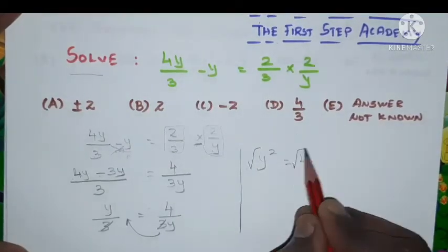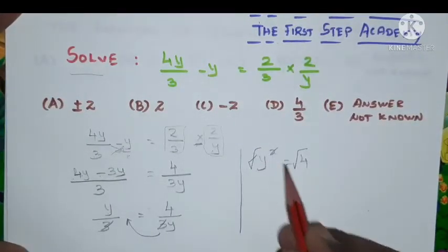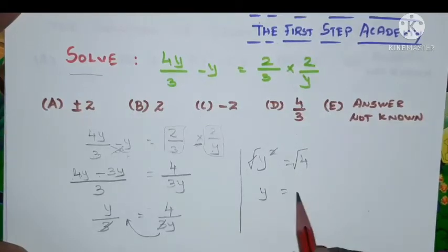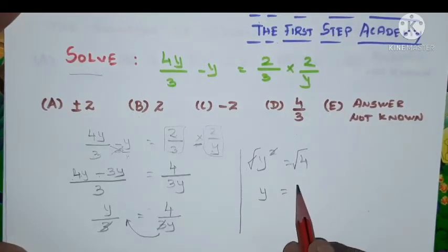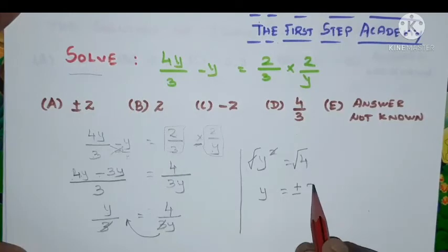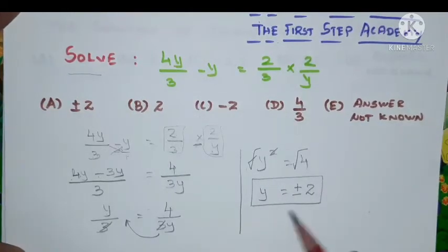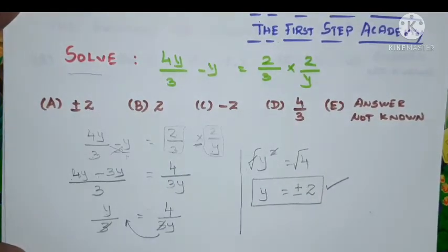Now, take square root on both sides. Hence, square root square will cancel. Hence, y is equal to square root of 4 can be written as plus or minus 2.